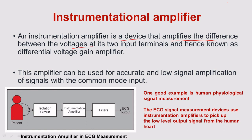Dear students, today we will see the new topic: instrumentation amplifier. It is a device that amplifies the difference between the voltage at two terminals. Hence it is known as a differential voltage gain amplifier. This is the best definition for instrumentation amplifier. It amplifies the difference between the two input terminals, and it basically works on the principle of a differential amplifier.